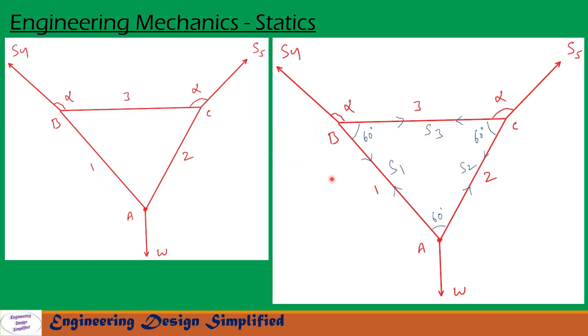First, let us see forces and reactions. At point A, weight W is hanging downwards. Because of this weight, this side of the string will experience tension and this side of the string will also experience tension. So the direction of S1 and S2 are shown away from this point here.